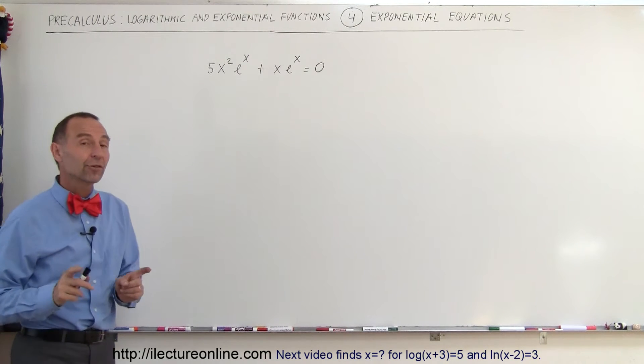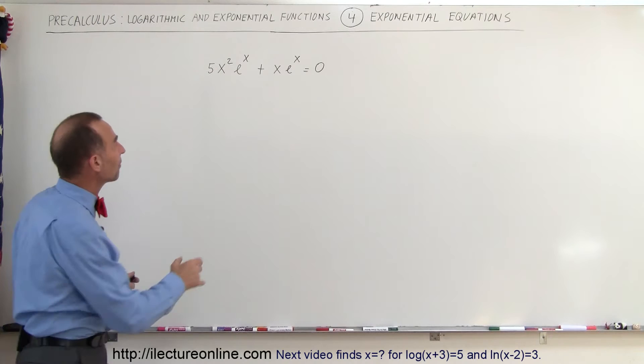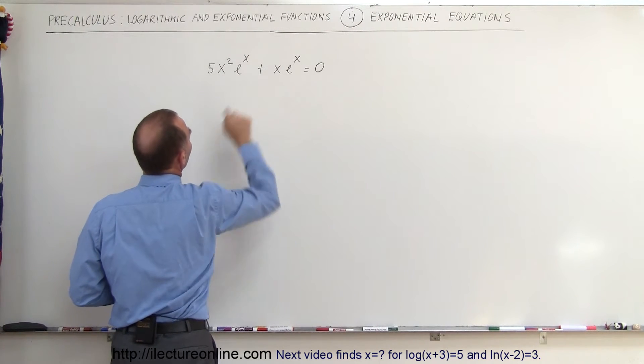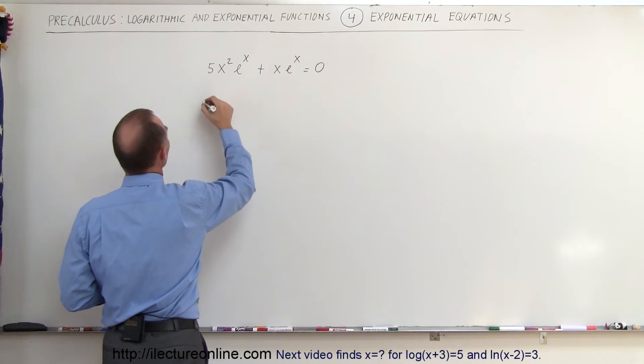Well, the best thing to do here is to factor out whatever we can. So we have e to the x, that's common in both terms, and we can factor out an x.